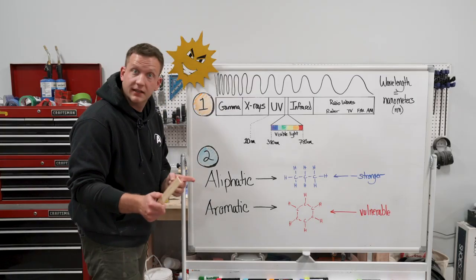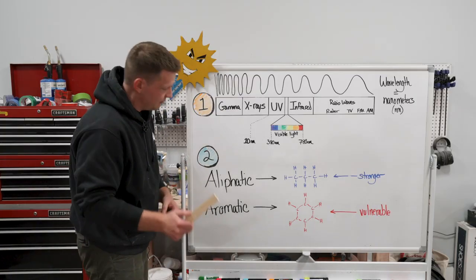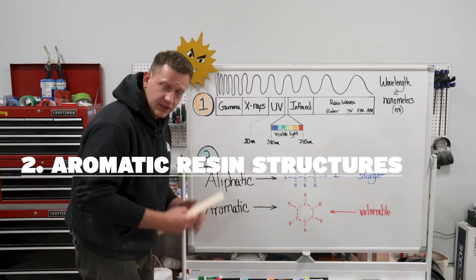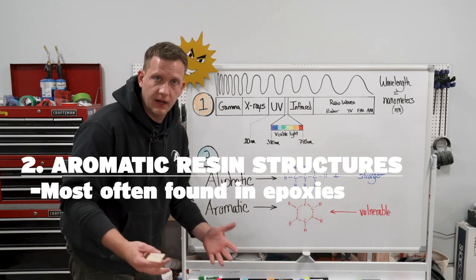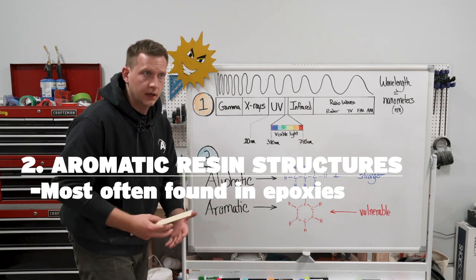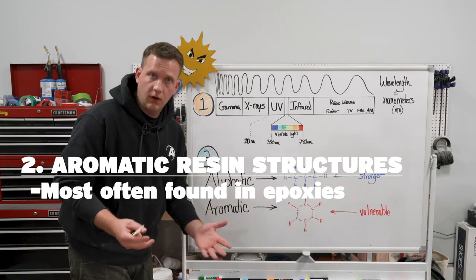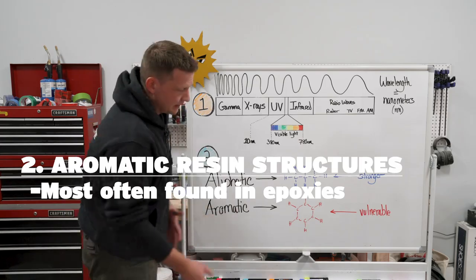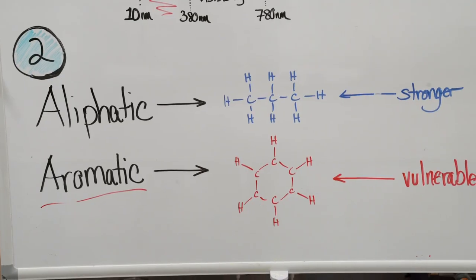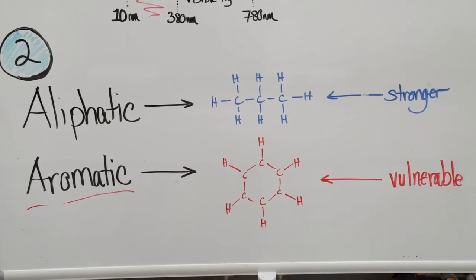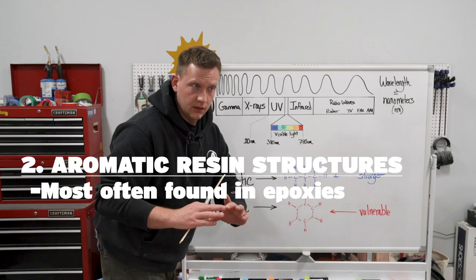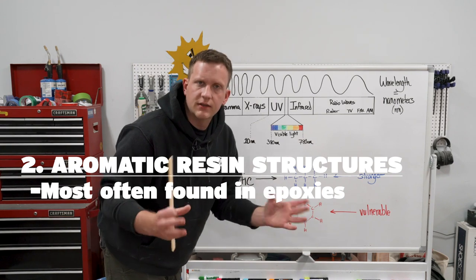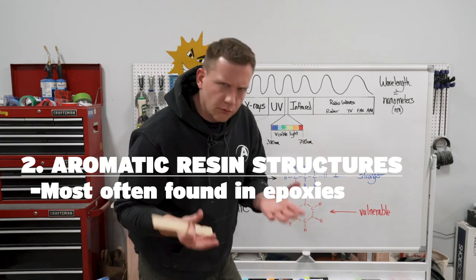The second type of molecular structure is aromatic. This is what you see most often in epoxies — almost guaranteed, all the epoxy you've used has been aromatic. Its molecular structure is actually in the form of a ring. Why do you need to know that? All you need to know is that it's a little bit more vulnerable.